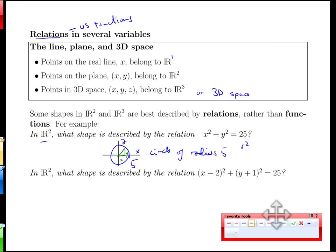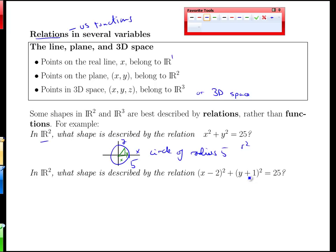Now we haven't really covered this in the fall term but it's an important idea of just shifting graphs, only here shifting relations. What happens if we keep the 25 the same but put a minus 2 and a plus 1 inside our squared? Our intuition says this should be a circle again but somehow it's different than the last one.